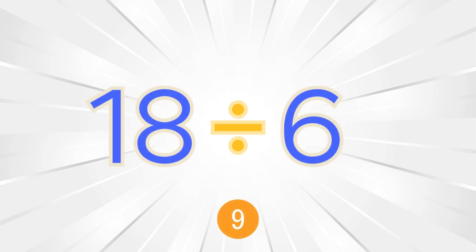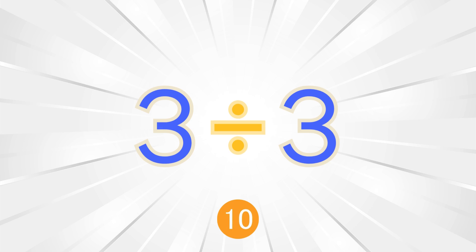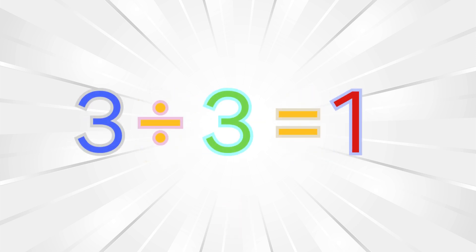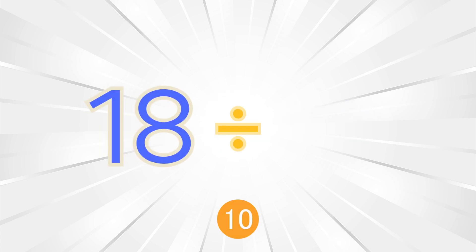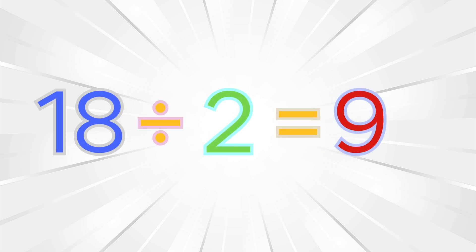Eighteen divided by six equals three. Three divided by three equals one. Eighteen divided by two equals nine.